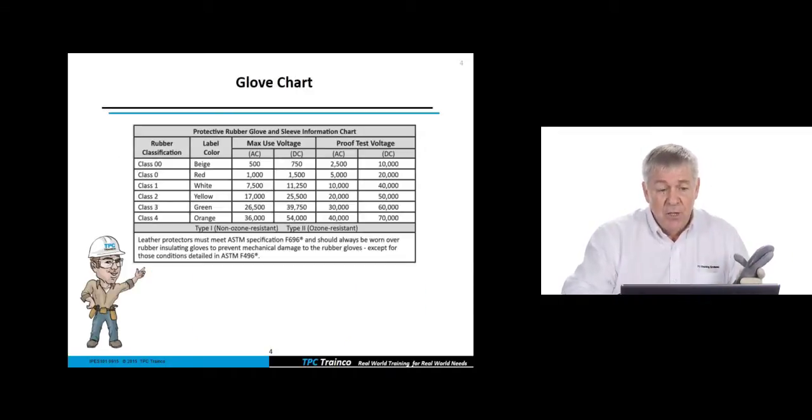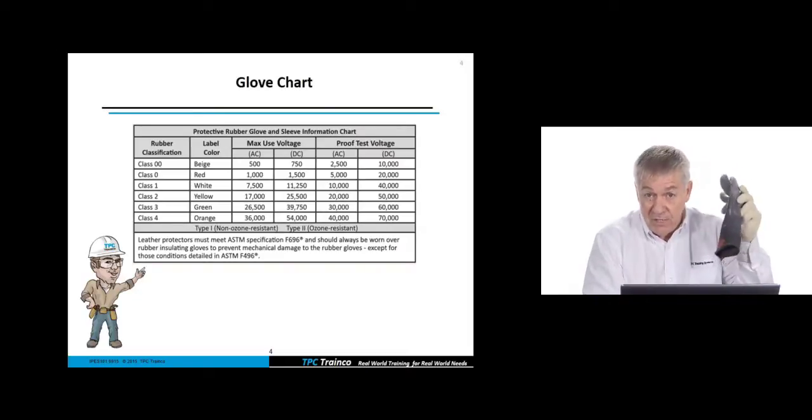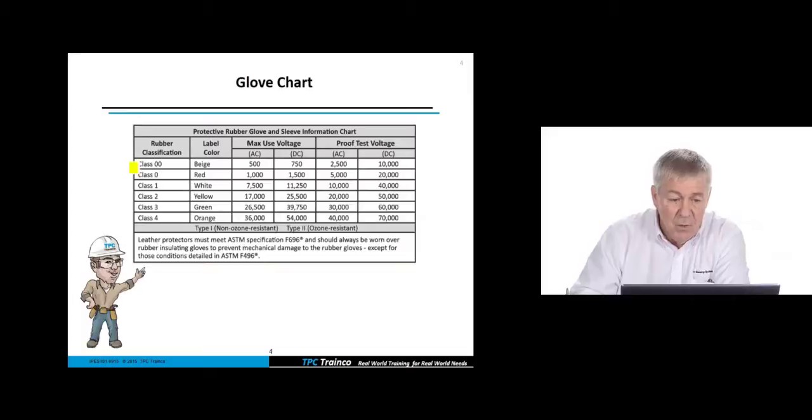But every six months, we're going to have this glove be dielectrically tested. So what does that mean? Well, that means that we're going to go, and remember I had a red label. So that means that I have a class zero glove. And when this gets to be sent out to be dielectrically tested, it's going to be tested at 5,000 volts AC and 20,000 volts DC.